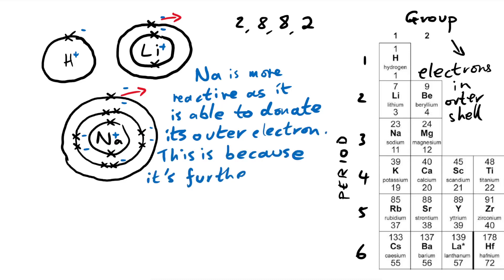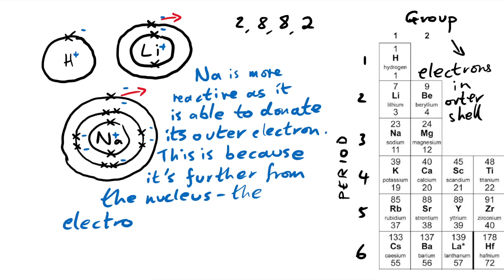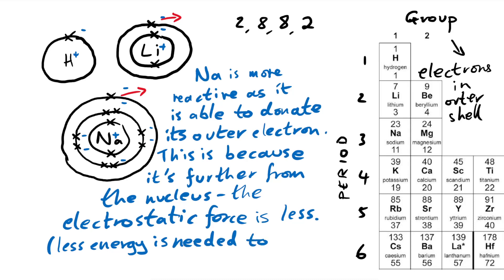So what does that mean? We can say, to be precise, the electrostatic force is less. It's like when you have two magnets: if they're really close to each other you have to put in more energy to get those magnets apart compared to if those magnets were further apart already. We can also talk about it in terms of energy - less energy is needed to remove that outer electron.